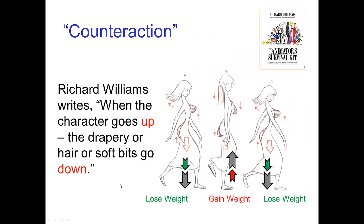Richard Williams in the Animator's Survival Kit describes this — he calls it counter action. He writes: when the character goes up, the drapery or hair or soft bits go down. In this illustration from his book, the character is coming down and speeding up, so she's going with gravity — losing weight. In the next pose, she's moving upwards and speeding up, and so it's as if she gains weight. Everything on her body — her hair, clothing, her body itself — seems to be heavier.